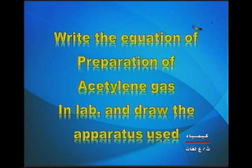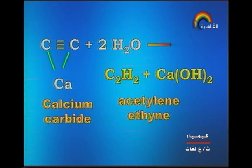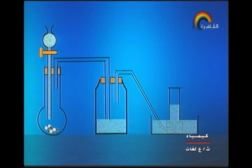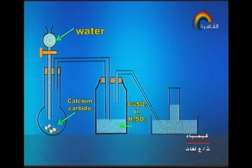Next type of question: write the equation for preparation of acetylene gas in the lab and draw the apparatus. Calcium carbide reacts with water to give acetylene and calcium hydroxide. In the apparatus shown on screen: water drips over calcium carbide; the gas passes over copper sulfate and then sulfuric acid to remove phosphine and hydrogen sulfide gases, then is collected above water.